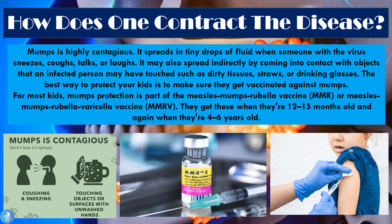The best way to protect your kids is to make sure they get vaccinated against mumps. For most kids, mumps protection is part of the MMR vaccine, which covers mumps, measles and rubella, or the MMRV vaccine available in some countries, which also covers varicella. In both cases, kids usually receive their first dose at 12 to 15 months of age and again when they're around four to six years old. These two doses are highly effective in preventing childhood viral infections such as mumps, rubella, varicella and measles.